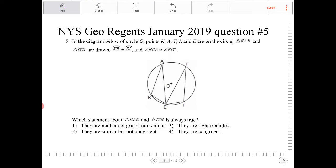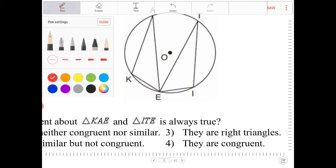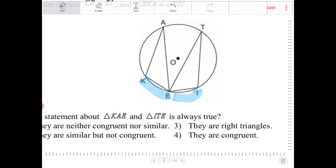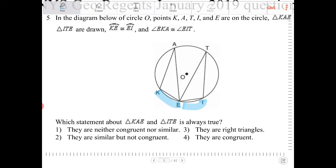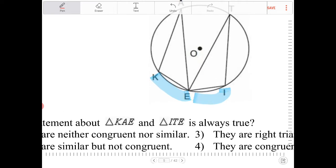Arc K-E is congruent to E-I, so I am going to indicate that with a highlighter. K-E is congruent to E-I, those two arcs are congruent. Angle E-K-A is congruent to E-I-T, so I am going to use a pen: E-K-A congruent to E-I-T. There you go.